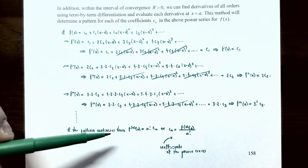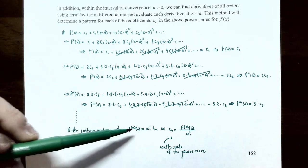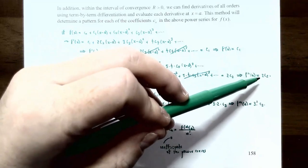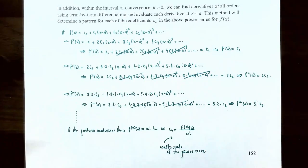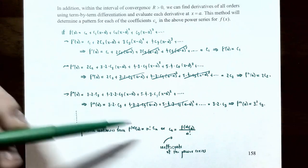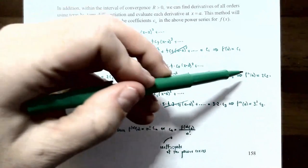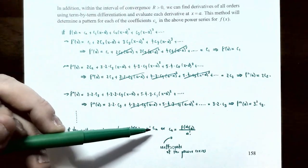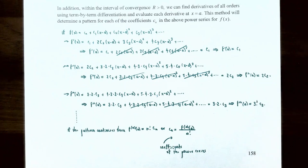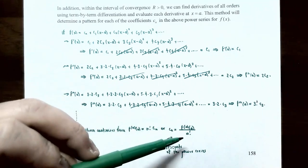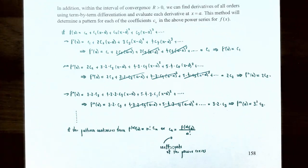The first derivative gave c_1 times 1!, the second derivative gave c_2 times 2!, the third derivative gave c_3 times 3!. So the nth derivative of f evaluated at a equals n! times c_n. Solving for c_n: c_n equals the nth derivative of f evaluated at a, divided by n factorial. These are the coefficients of the power series for f(x).